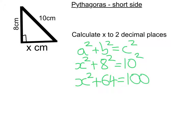So I want to get my number terms onto one side, so I'm going to take away 64 from both sides. And I'm going to get x squared equals 36.